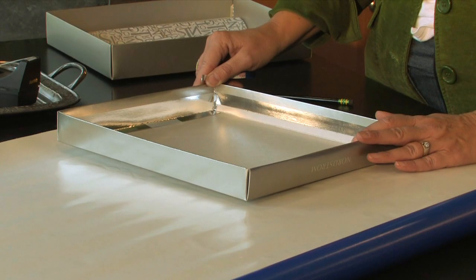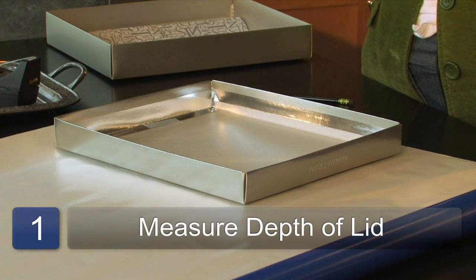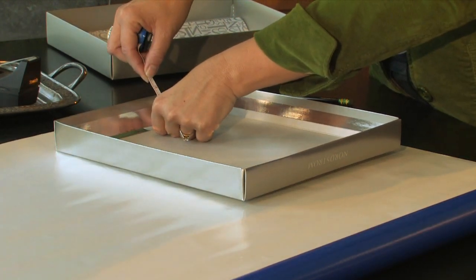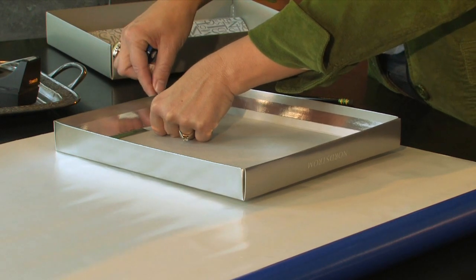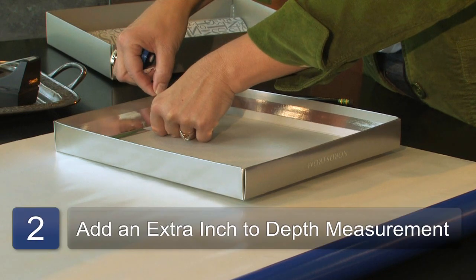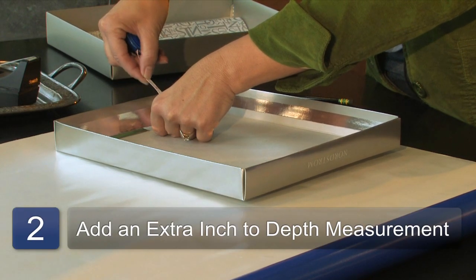The first thing you want to do is measure the depth of your lid. So my box lid is one and a half inches. So I know I need that much wrapping paper for the edge, but I'm also going to add an extra inch. So we're going to go to two and a half inches.